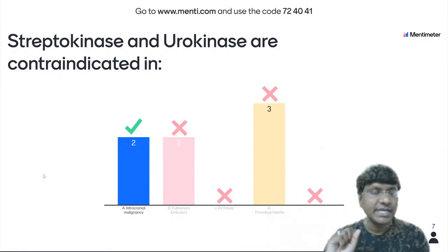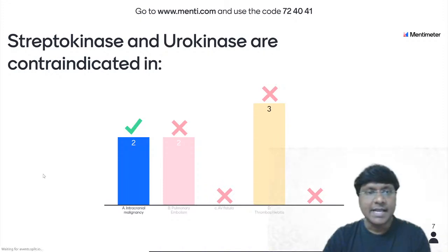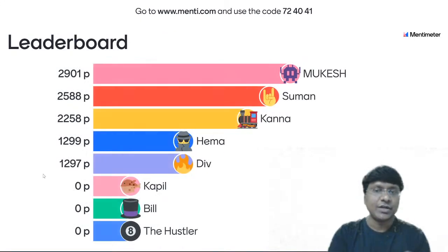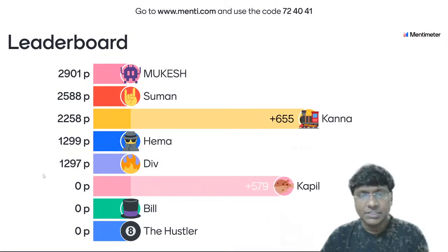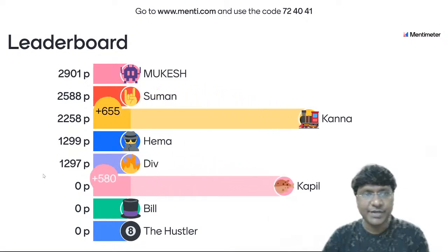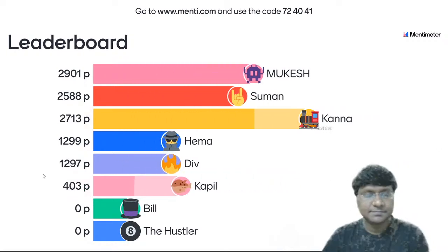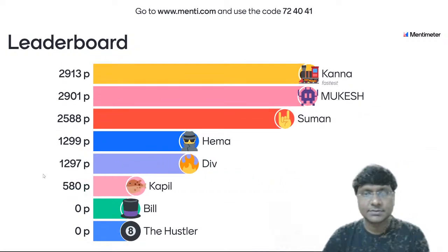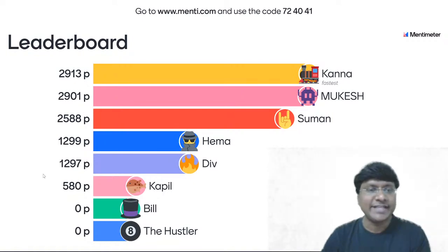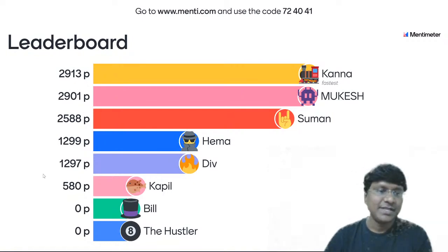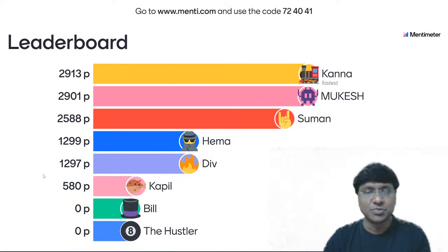The answer to this question is intracranial malignancy. Karna answered this question fast and is leading the leaderboard with 2913 points. Mukesh is close with 2901 points — there is a tug of war between Karna and Mukesh. The next question is the last question of this test and discussion.